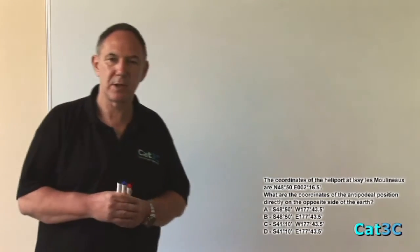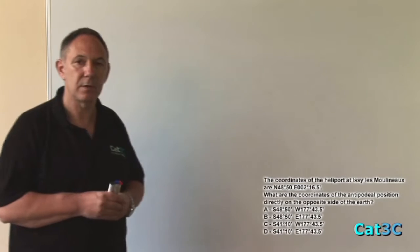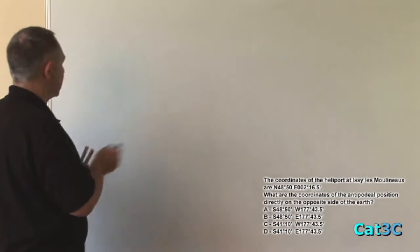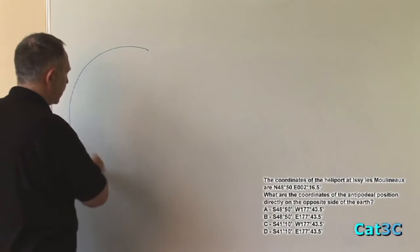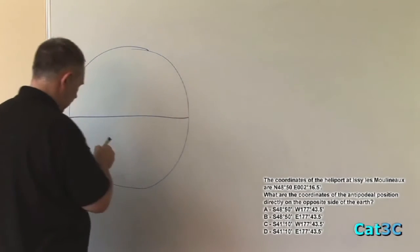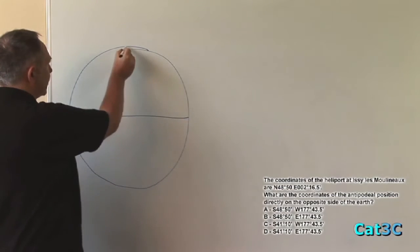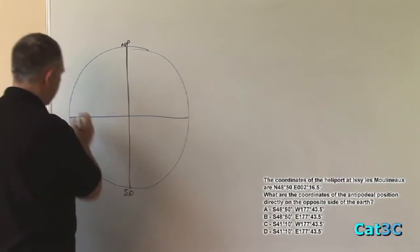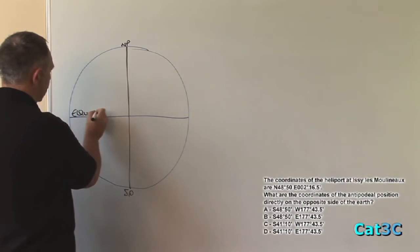The way to look at this is by drawing two diagrams, one of the earth from a side view and one from a plan view. So the side view looks like so, where we put the equator in and we then place the polar axis. So that's my north pole, that's the south pole, and that is the equator.